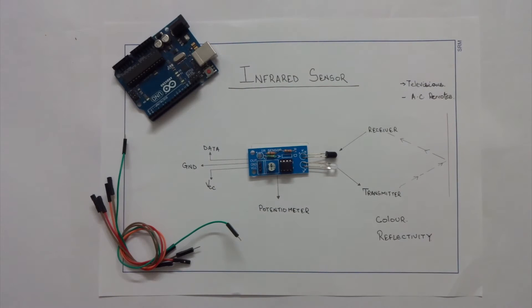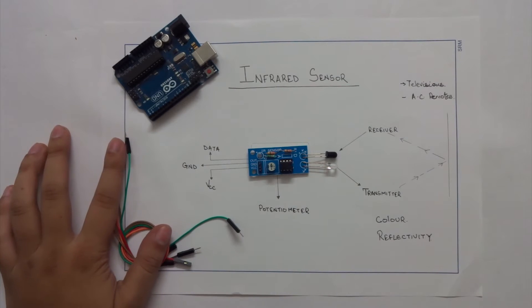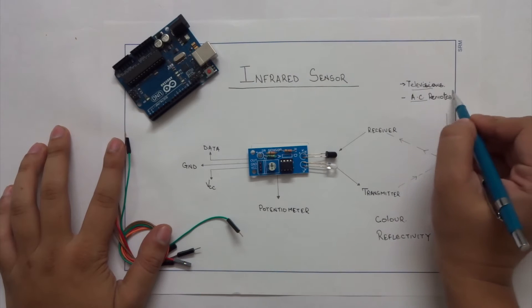Infrared sensors are sensors which we have been using in all our day to day lives, everywhere and every time. Thinking where and how? All our televisions or air conditioners work on IR communication.